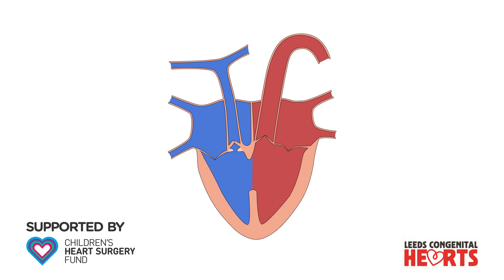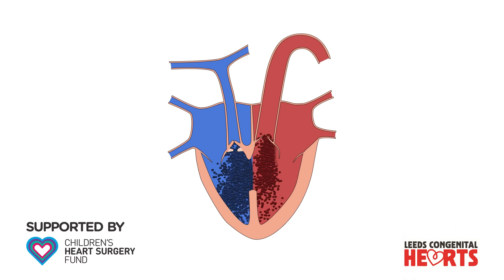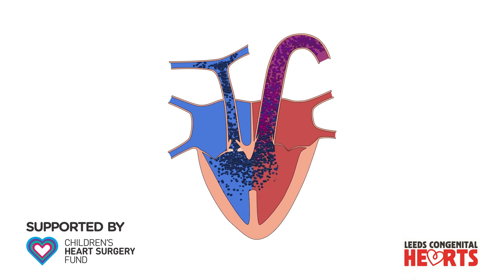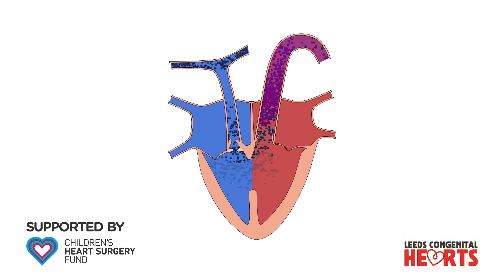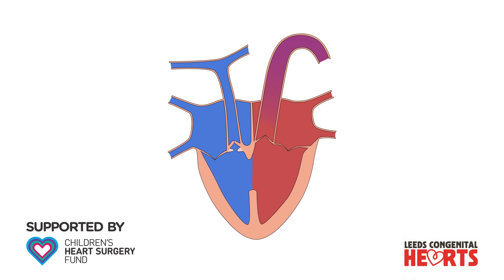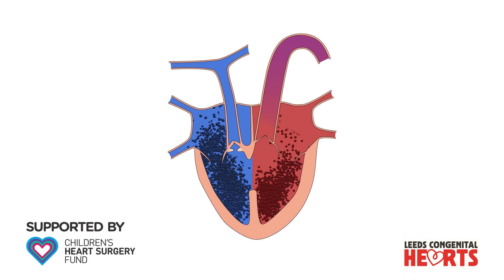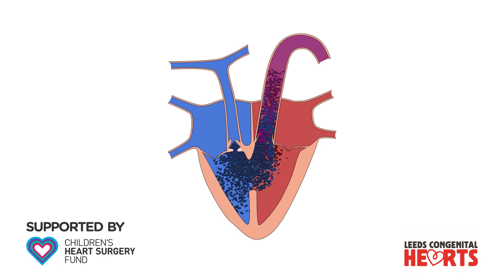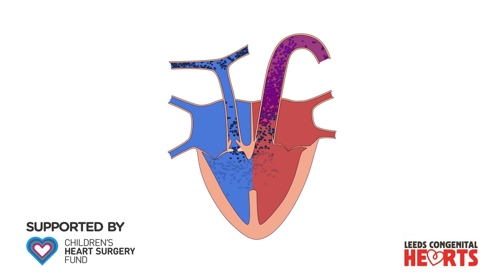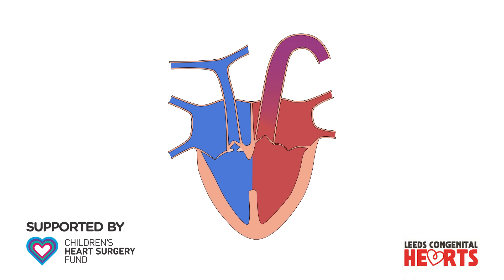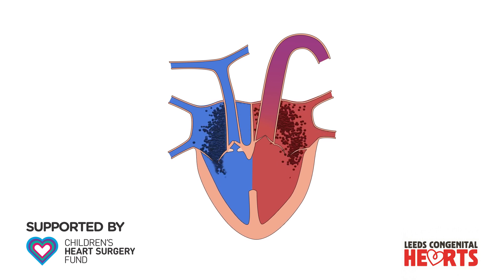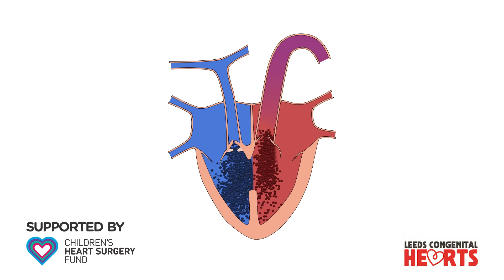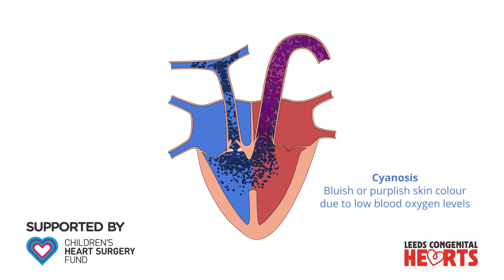The bluer blood that contains lower levels of oxygen mixes with the redder blood that contains higher levels of oxygen that is being pumped from the left ventricle to the aorta and to the body. This causes the person's oxygen levels to be lower than normal. This lower level of oxygen causes their skin to be slightly blue in colour, and this is called cyanosis.